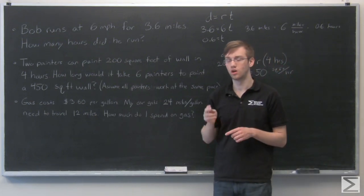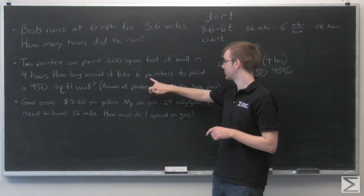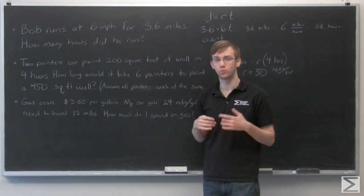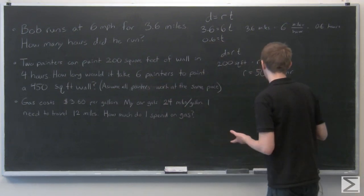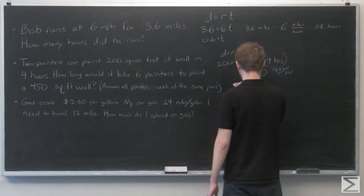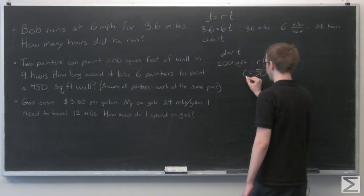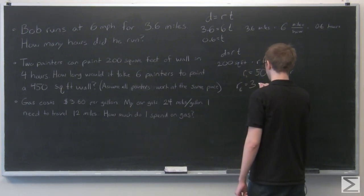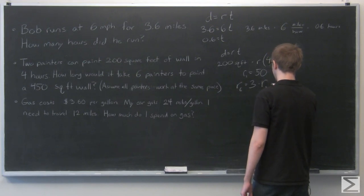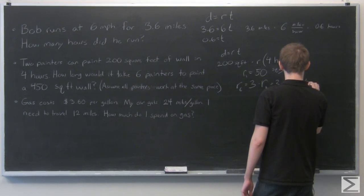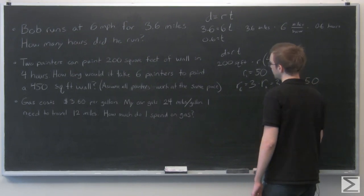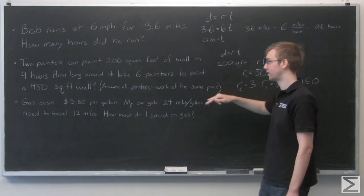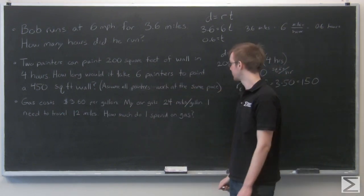Since that's true for two painters, for six painters we can assume that they work three times as fast. So I can say the rate of two, so rate of six is going to be three times rate of two people equals three times 50 equals 150.